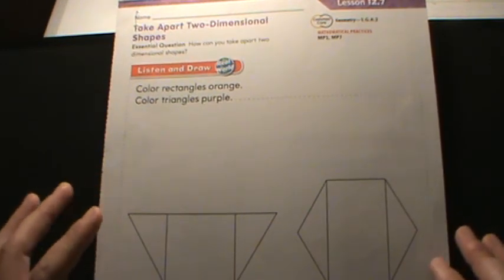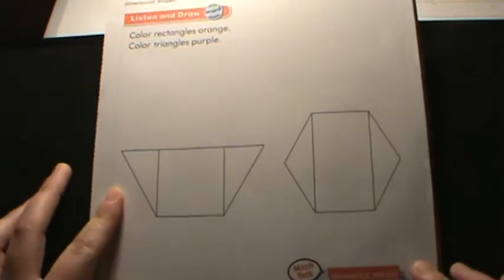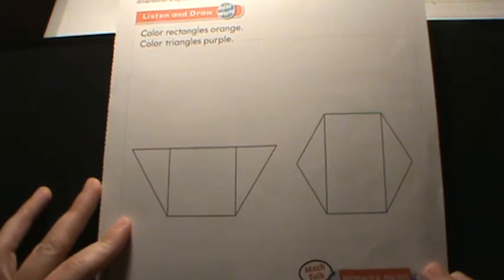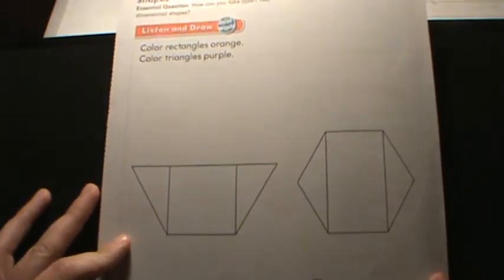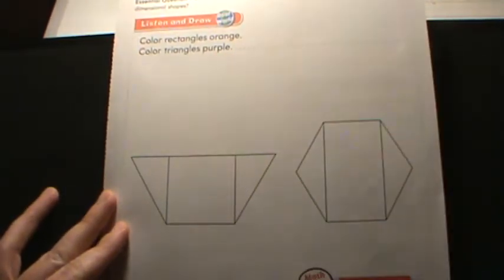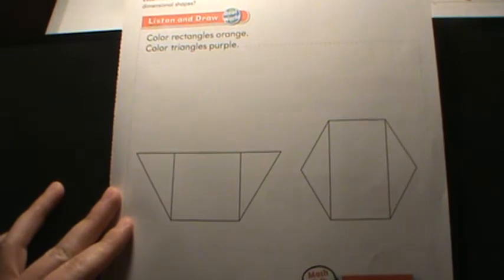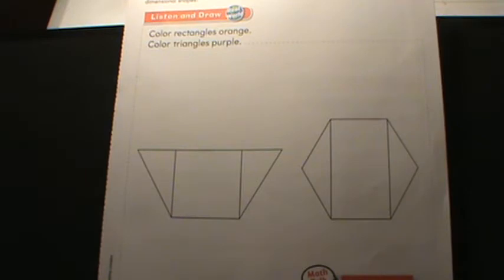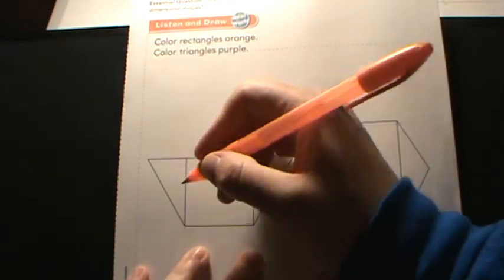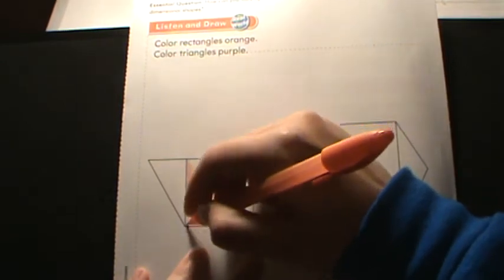Angelina put some triangles and rectangles together. She drew pictures to show what she made, color to show how she put the shapes together. Our directions are telling us to color all the rectangles orange and all of the triangles purple. Remember, a square is a rectangle, a special rectangle.